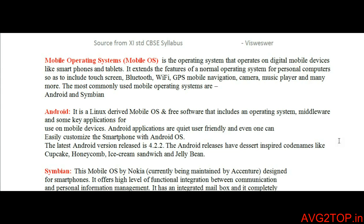There are two main types: Android and Symbian. Android is a form of Linux software and is a free open-source OS provided by Google. It can be installed on any brand of mobile. Symbian, on the other hand, is used only by Nokia and provides functional integration between communication and personal information management.